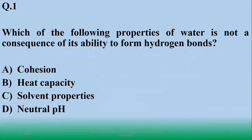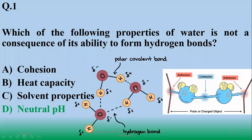You know that hydrogen bonds are based on such properties in water. Hydrogen bonds are based on the heat capacity in water, and its solvent properties are also based on hydrogen bonding. The neutral pH is due to its ionization property, so the right option is D.